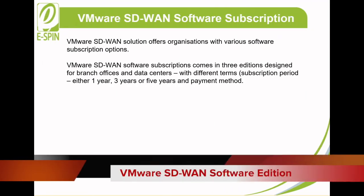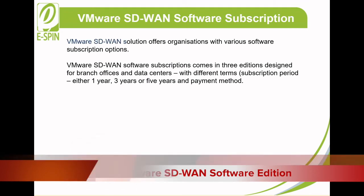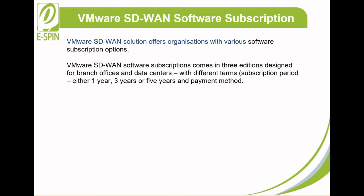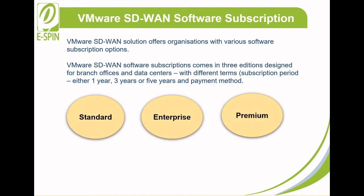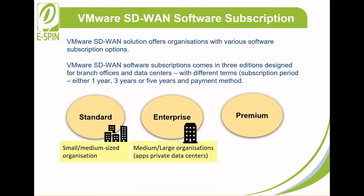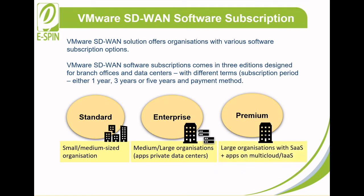Finally, we will discuss about VMware SD-WAN software subscriptions. VMware SD-WAN offers organizations various software subscription options. The subscriptions come in three editions designed for branch offices and data centers, with different terms — subscription periods of either one year, three years, or five years — and payment methods. The three editions are Standard, Enterprise, and Premium. The Standard edition is ideal for small or medium-sized organizations, while the Enterprise edition is built with features right for medium or large organizations where the majority of apps are hosted in private data centers. The Premium edition is perfect for large organizations with SaaS or apps hosted in a multi-cloud as well as IaaS environments.